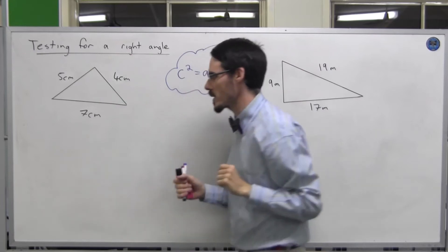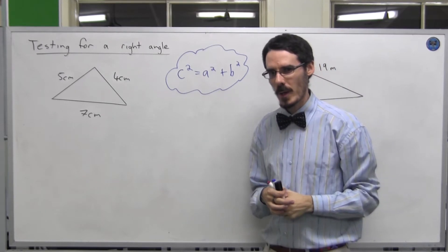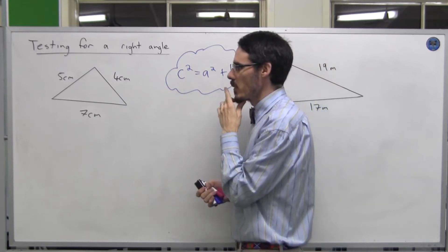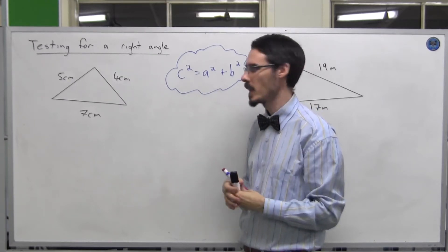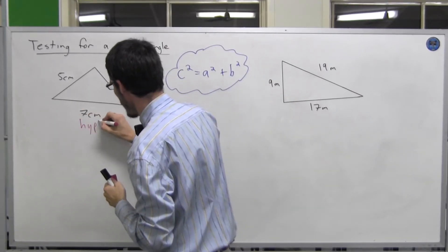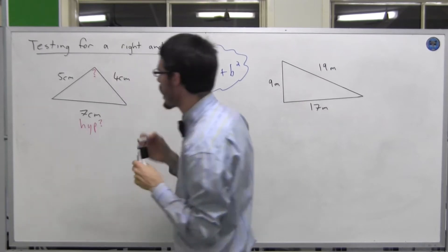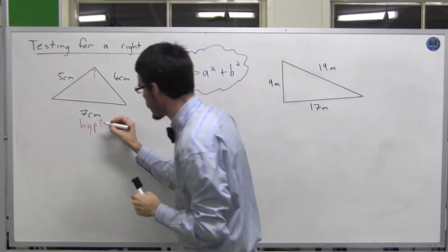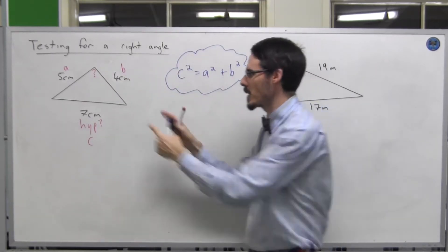Look at this triangle. I want to know whether there's a right angle in it. If there were, where would the right angle be? You have to look at the triangle and consider that the right angle would be opposite the hypotenuse, and the hypotenuse would be the longest side. This is the longest side. If there was a right angle, that would be the hypotenuse, and this would be where the right angle was. So if I was going to plug it into my formula, this would be c, and these would be a and b. It doesn't matter which order we put a and b in.